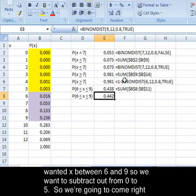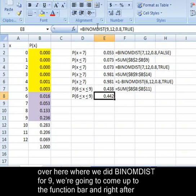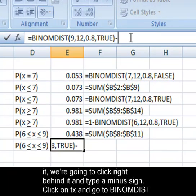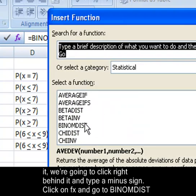So we're going to come over here where we did BINOMDIST for nine. And right after it, we're going to come up to the function bar, and right after it, we're going to click right behind it and type a minus sign. Click on fx and go to BINOMDIST again.